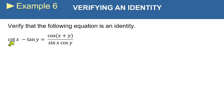It says verify that the cotangent of x minus the tangent of y is equal to cosine of x plus y over sine of x times cosine of y.